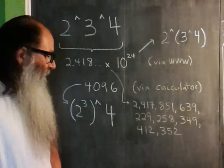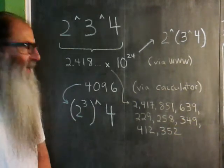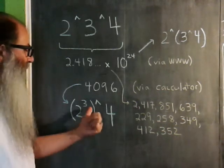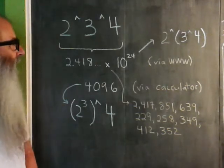Whereas in the calculator world, it binds this way. 2 cubed is 8, and then if you take 8 and raise it to the 4th power, you get 4,096.